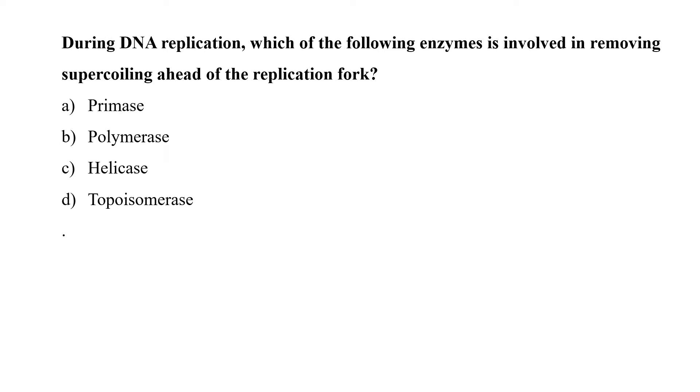During DNA replication, which of the following enzyme is involved in removing supercoiling ahead of the replication fork? That is very easy. Primase, polymerase, helicase, or topoisomerase. Basically, topoisomerase helps in relaxing supercoiled DNA to allow the initiation of smooth replication event. So option D is the correct answer.